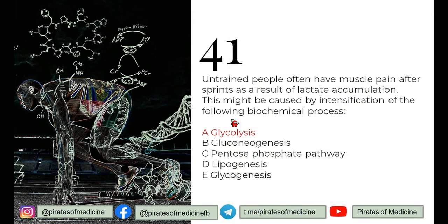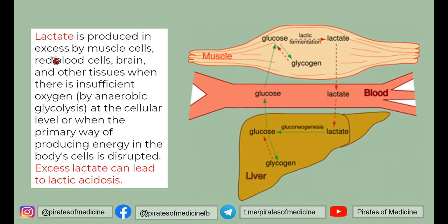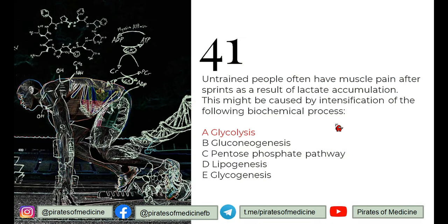Q41: untrained people often have muscle pains after sprints as a result of lactate accumulation. What biochemical process is intensified? Lactate is produced by anaerobic glycolysis, and excess lactate can cause lactic acidosis. The process that is intensified here is anaerobic glycolysis — remember that glycolysis has two forms: anaerobic and aerobic.